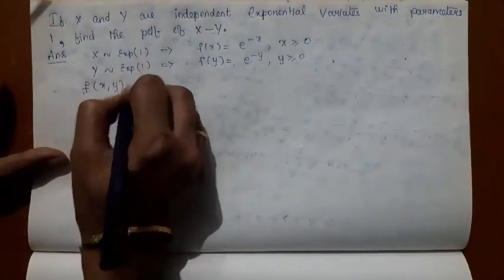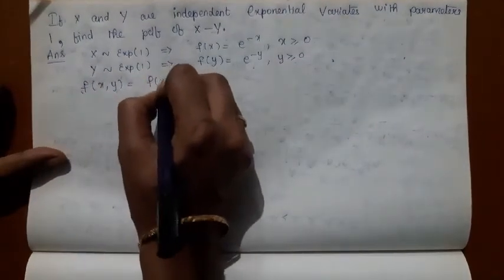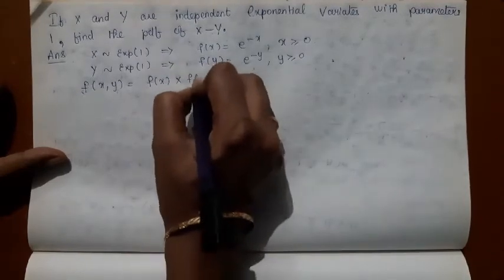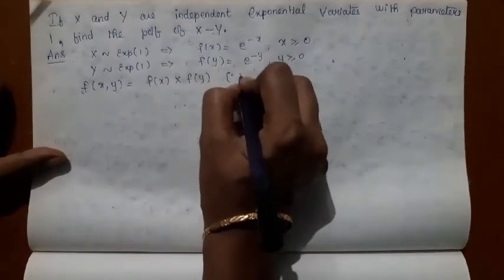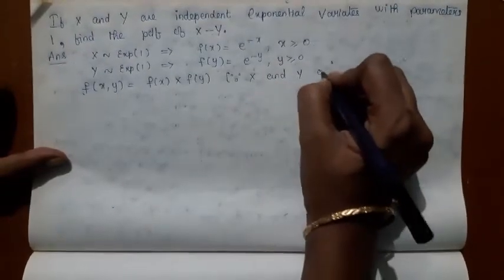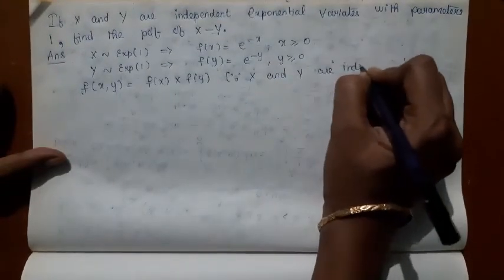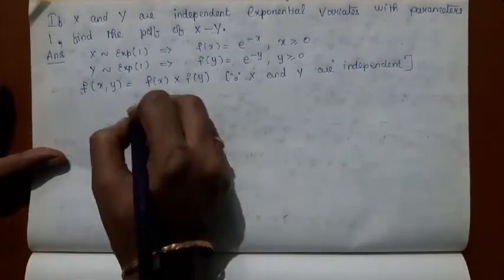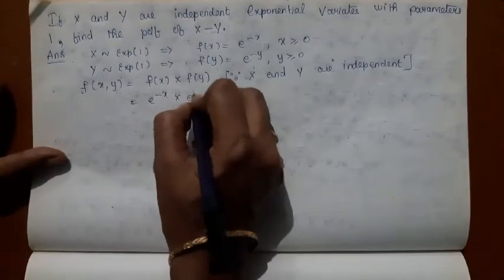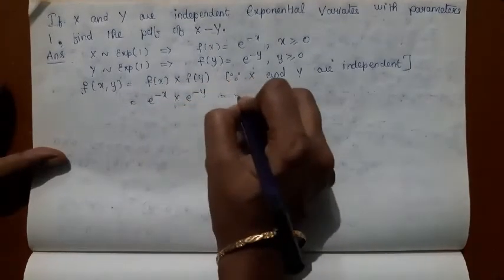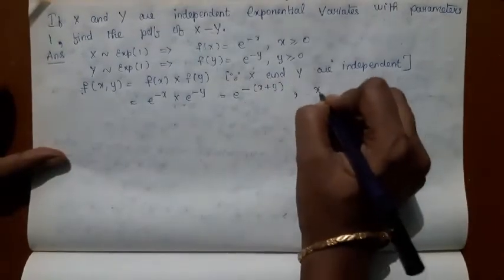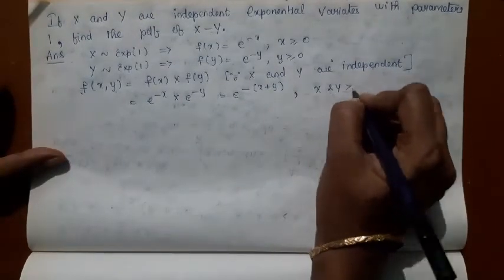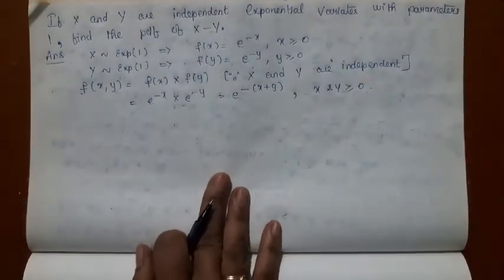Now f(x, y) = f(x) · f(y) because X and Y are independent. So you have e^(-x) · e^(-y) = e^(-(x+y)) when x and y are greater than or equal to 0.